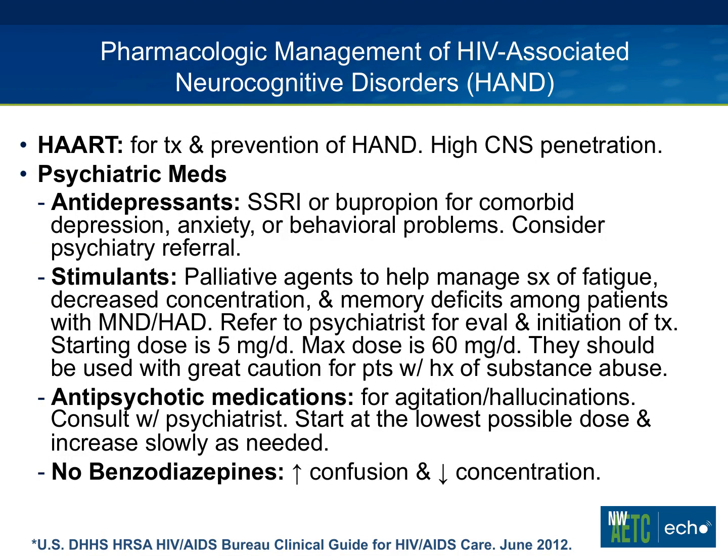In terms of treatment, HAART is used for both treatment and prevention of HAND. CNS penetration effectiveness scores are being measured — certain antiretroviral agents are better for CNS penetration, though testing to validate effectiveness is still ongoing, with a large multi-site clinical study underway. Psychiatric medications such as SSRIs or bupropion are used for comorbid depression and anxiety. Stimulants at low doses help manage fatigue, decreased concentration, and memory deficits. Antipsychotics can be used for agitation and hallucinations. Benzodiazepines are not recommended due to increased confusion and decreased concentration.